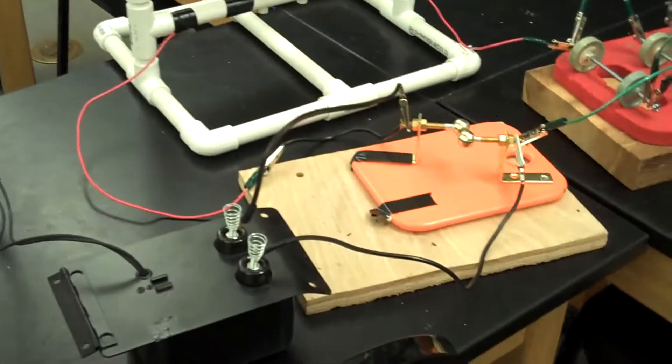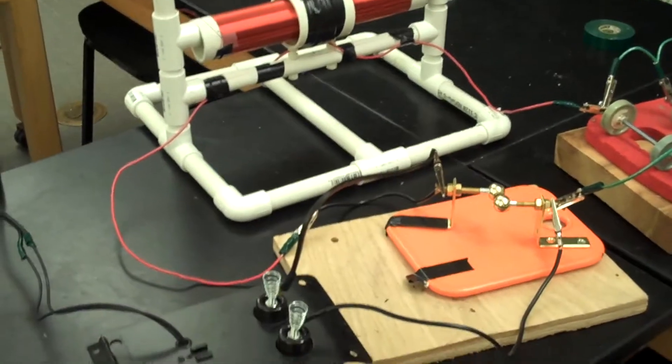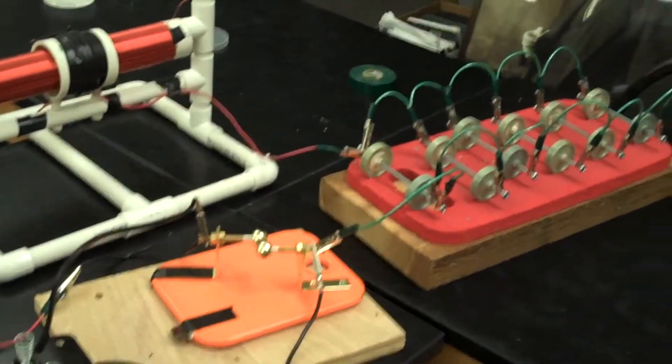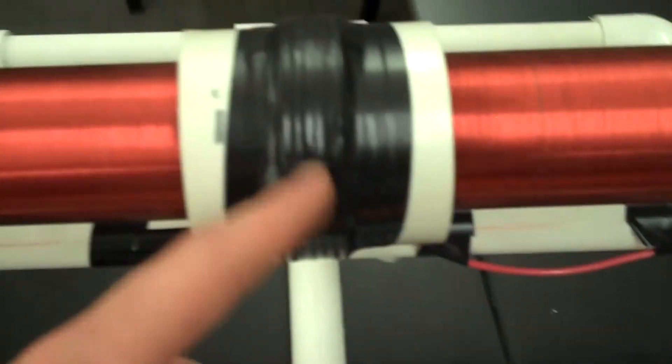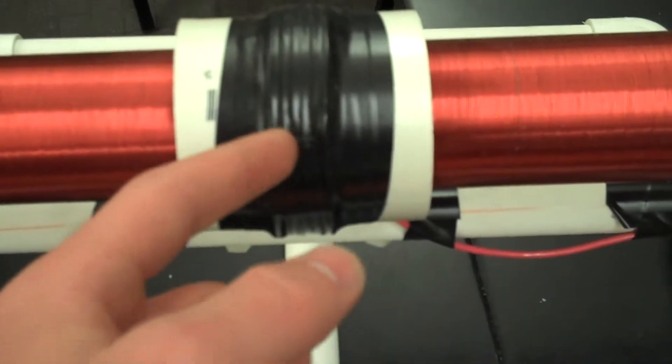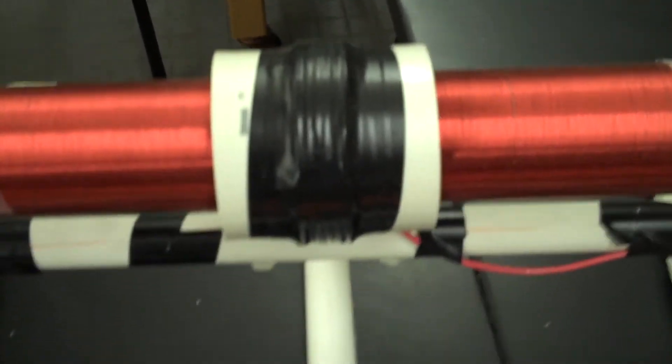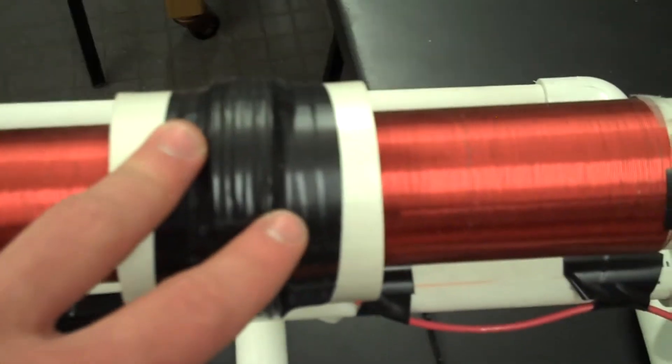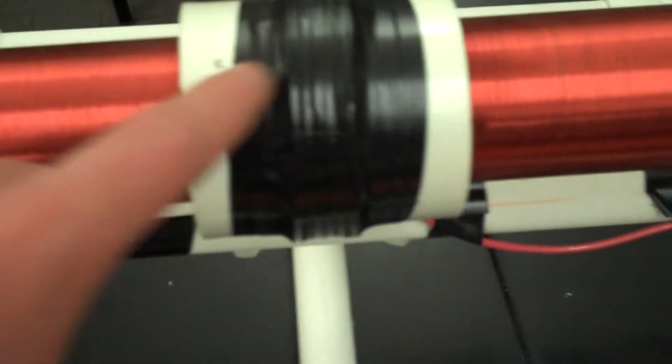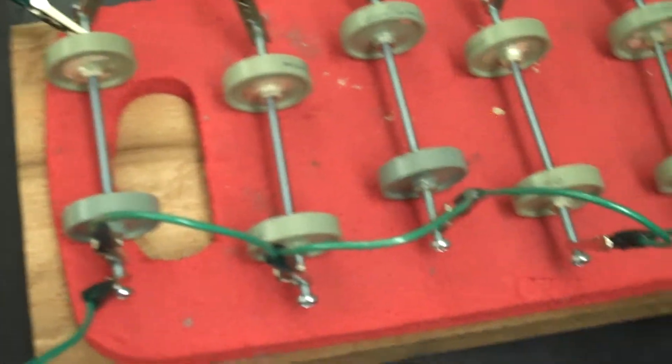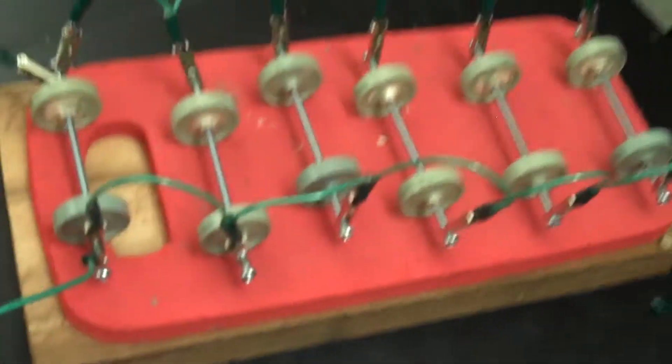So a Tesla coil has two coupled circuits, and these circuits are called LC circuits, which means they have inductance and capacitance. Inductance is the property in a coil. So underneath here is a coil of wire. This is the primary circuit. And this coil of wire, because a wire has a magnetic field, it can produce a counter voltage which opposes the current flow, as well as capacitors, which build up a charge. That's the C of the LC circuit, that builds up a charge and opposes current flow.